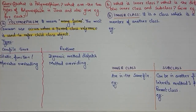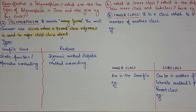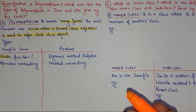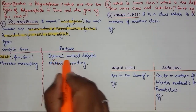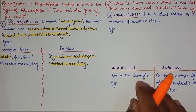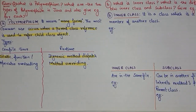Generally, polymorphism means one name and many different functionalities. If polymorphism is resolved at compile time, we call it compile-time or static polymorphism. If it is resolved at runtime, we call it runtime polymorphism. Runtime polymorphism is an example of dynamic method dispatch or method overriding. So there are two different types of polymorphism: compile time and runtime.